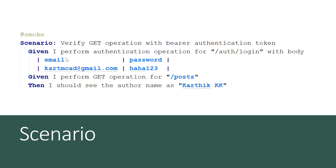As we saw in our previous video, we need to pass the body with the email and password. Then we need to perform a GET operation for the post to see if it works with this authentication token — also called the access token — that it generates. We need to pass this as a header for the post and then perform the operation.